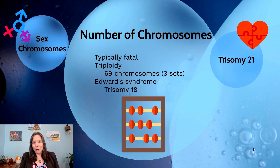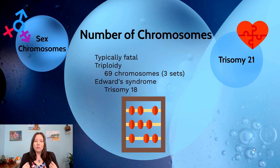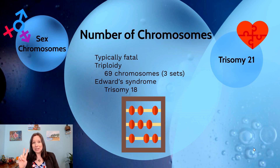The first category — atypical chromosome number — tends to not be good. Inheriting an extra or missing chromosome most often leads to fatality and miscarriage early in pregnancy. Some conditions lead to miscarriage later in pregnancy. For instance, triploidy is when an individual inherits three sets of chromosomes — three sets of 23, leading to 69 total — and is not survivable. Edwards syndrome, or trisomy 18, involves an extra chromosome on the 18th pair and tends to be fatal within the first year of life.